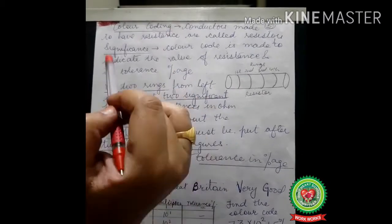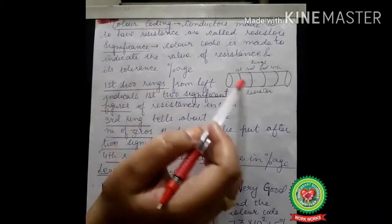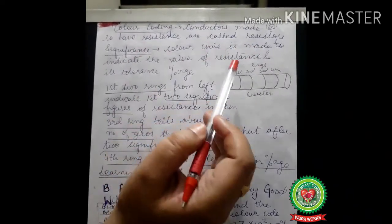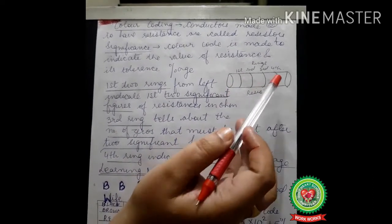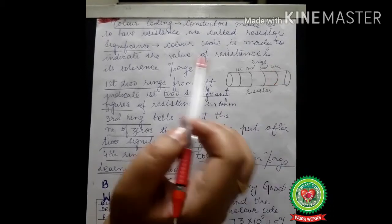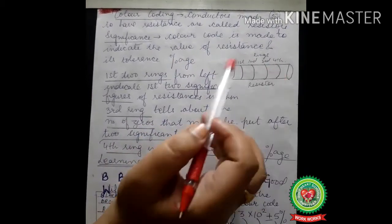The significance of this color coding is made to indicate the value of resistance and its tolerance power. How much the resistance is and how much tolerance power it has. If the temperature is increased or decreased, we should know how much the resistor can tolerate.